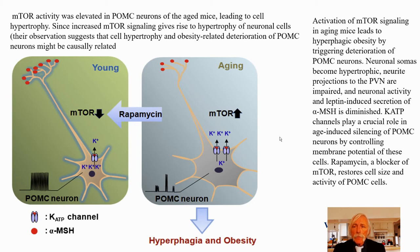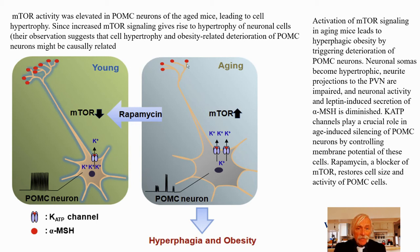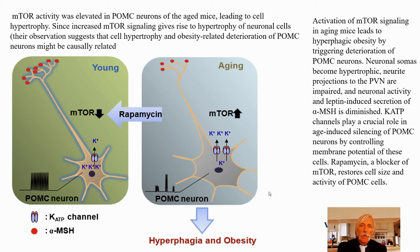Neurosomal cell bodies become hypertrophic, neurite projections have less alpha-MSH projecting to the PVN — that becomes impaired. So spontaneous activity and leptin-induced secretion of alpha-MSH is diminished. KATP channels play a crucial role here in silencing the POMC neurons by controlling membrane potential. Rapamycin can be used to study this. So now you get an even further level of understanding at the level of the neuron — yet another window to what we've been talking about.